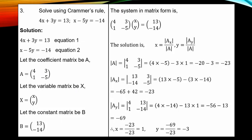Question 3: solve using Cramer's rule the system of simultaneous linear equations. Let's label the equations. The first is 4S plus 3Y equal to 13 — equation 1. The second is S minus 5Y equal to minus 14 — equation 2. To use this method, we have to define about three matrices.